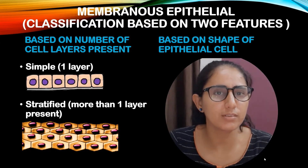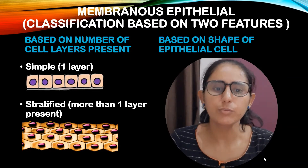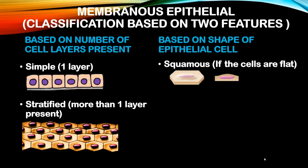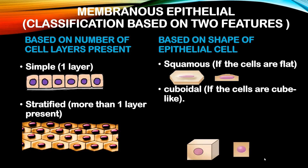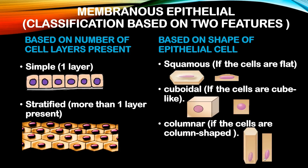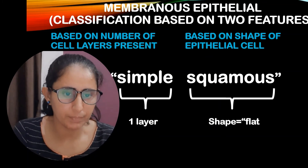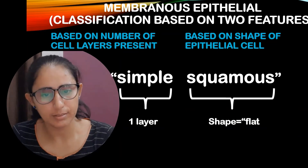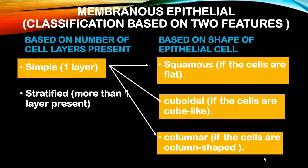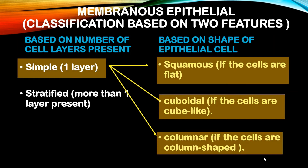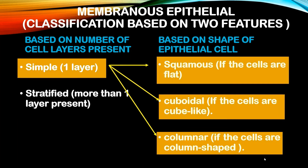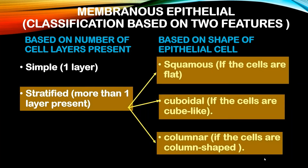The shape of epithelial cells determines their second name. Flat cells are called squamous, cube-like cells are called cuboidal, and column-shaped cells are called columnar. To name an epithelium, state the number of cell layers first, then the shape of the cells. Common examples include simple squamous, simple cuboidal, simple columnar, stratified squamous, stratified cuboidal, and stratified columnar.